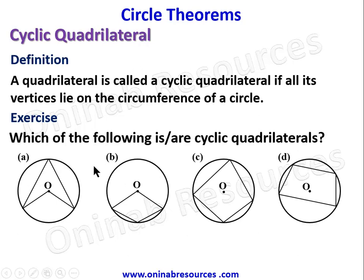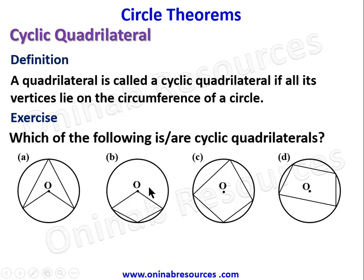We have diagrams A, B, C, and D. Let's take it diagram by diagram. For diagram A, only three of the vertices lie on the circumference of the circle, so it is not a cyclic quadrilateral. For B, the center is O, and only three vertices lie on the circumference, so B is not a cyclic quadrilateral either.